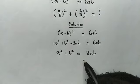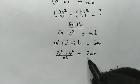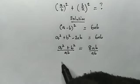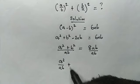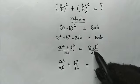So divide this by ab and divide here by ab. Split this denominator. We get a²/ab + b²/ab. This will be equal to 8ab/ab.